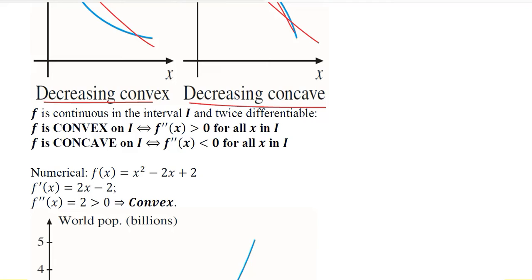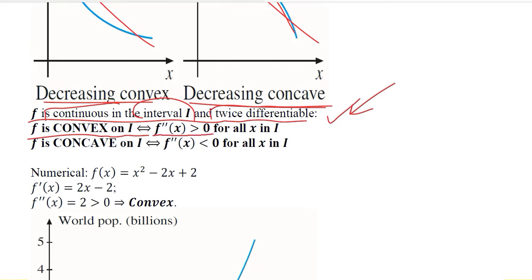Now let us put this concept into formal terms. f is continuous in the interval I and twice differentiable — these are the two requirements. The function must be continuous with no gaps or missing discrete elements, and it must be twice differentiable, because taking the second order derivative clarifies whether we have a convex or concave diagram. If the function is convex on I, then f''(x) is greater than 0 for all x in I. If it is concave, then the second order derivative will be negative.